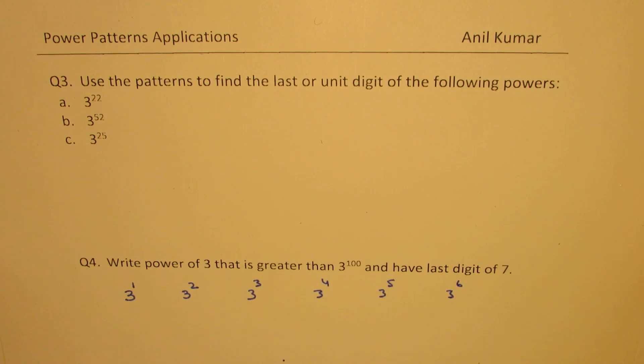Well, 3 to the power of 1 is 3. 3 to the power of 2 is 3 times 3, which is 9. 3 to the power of 3 is 27. You can multiply the previous number by 3 to get the next power. So, we get 81 here. Multiply 81 by 3 and we get 243.